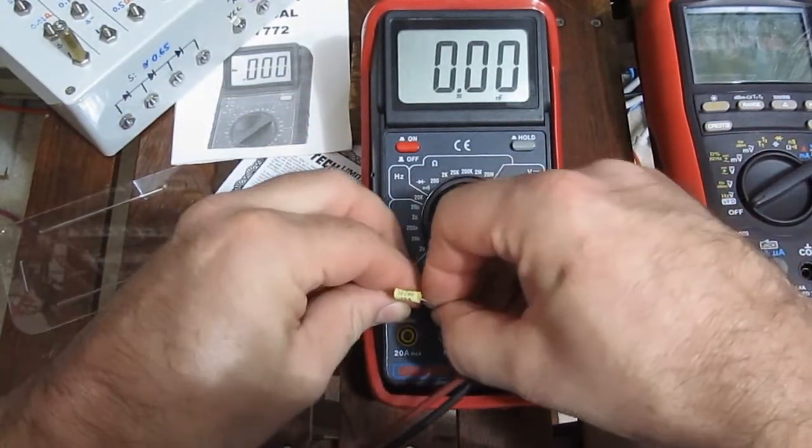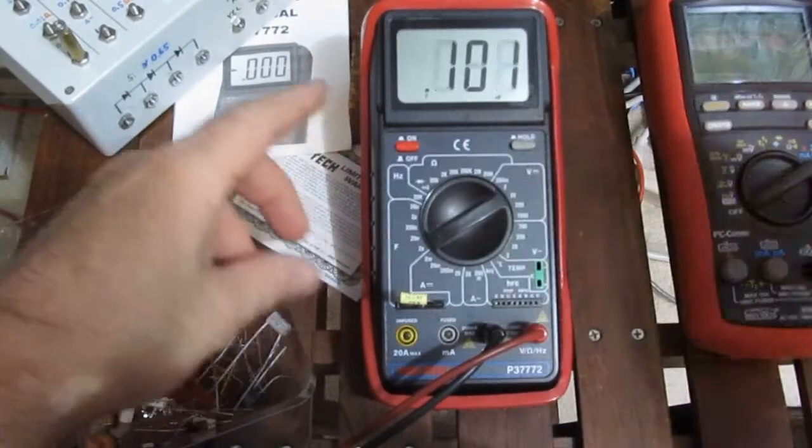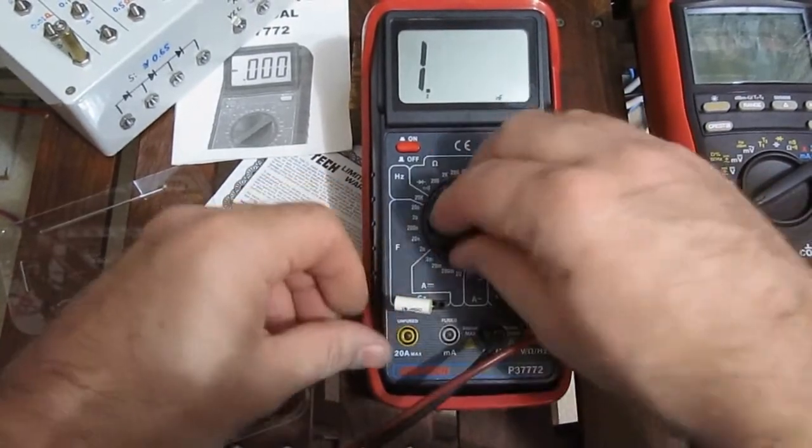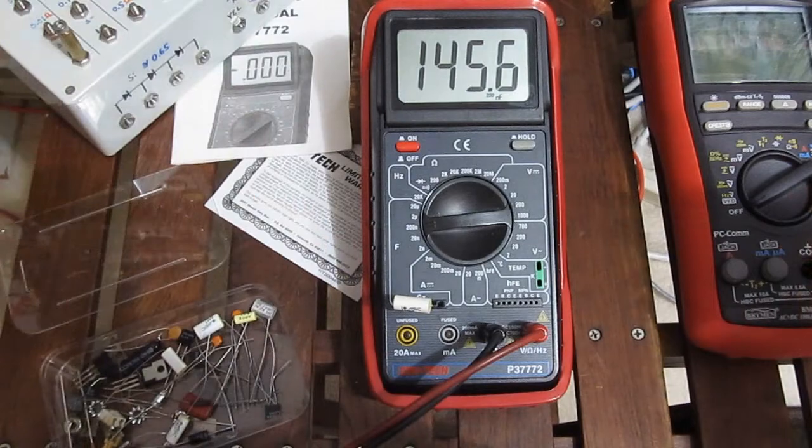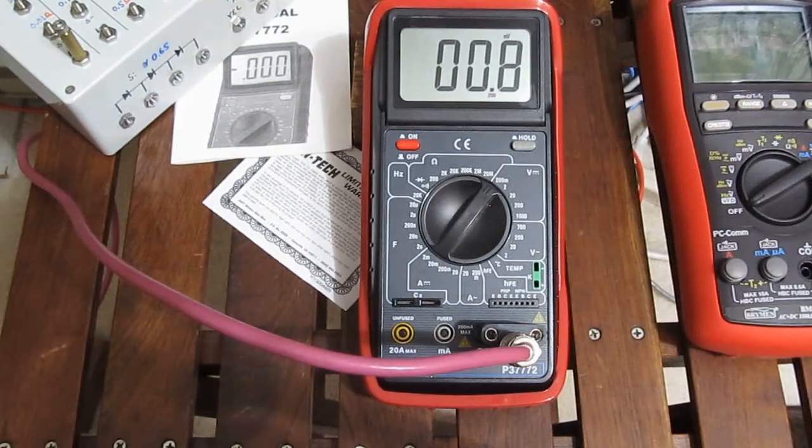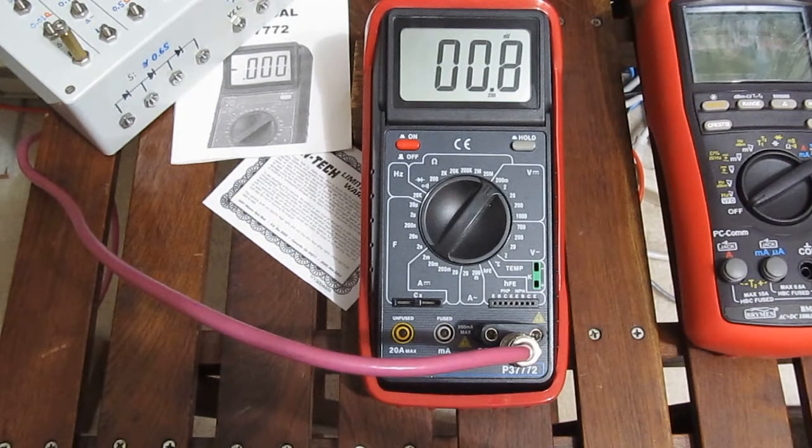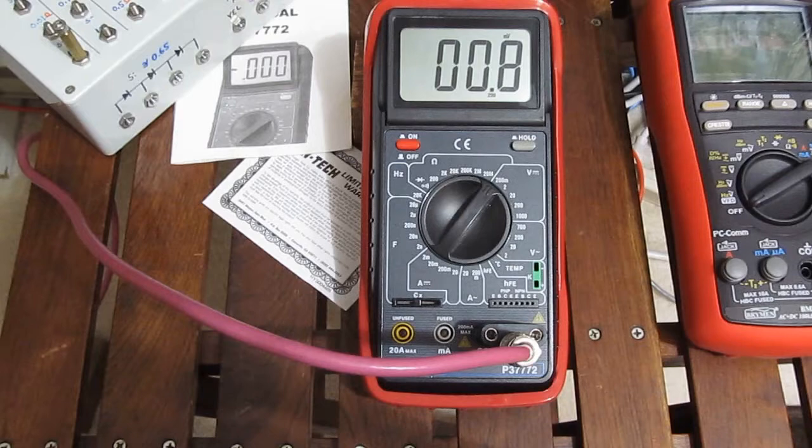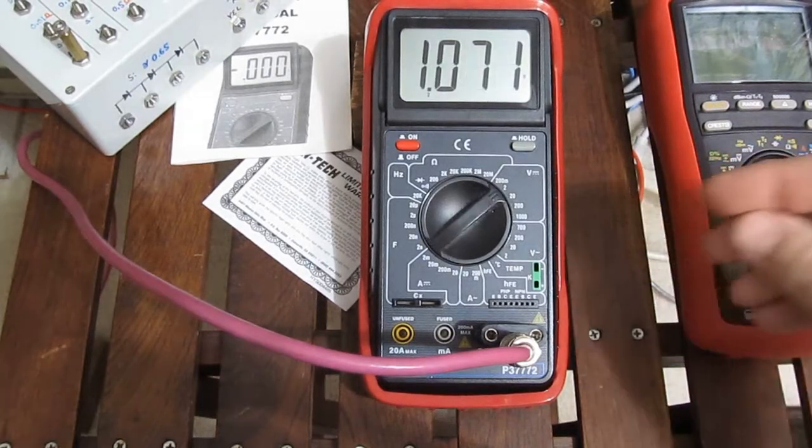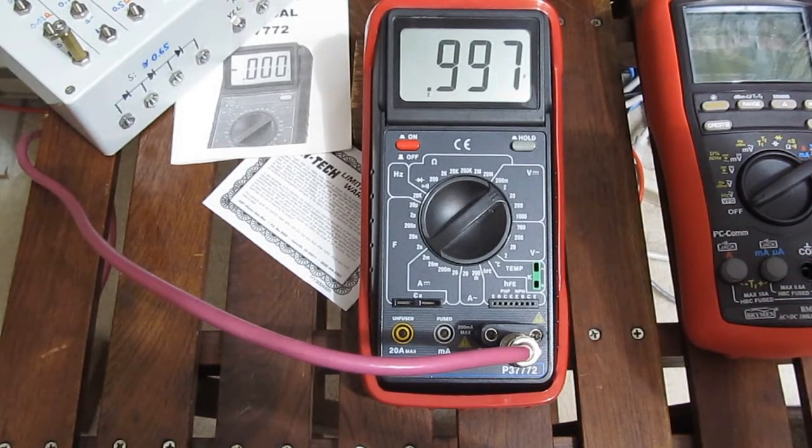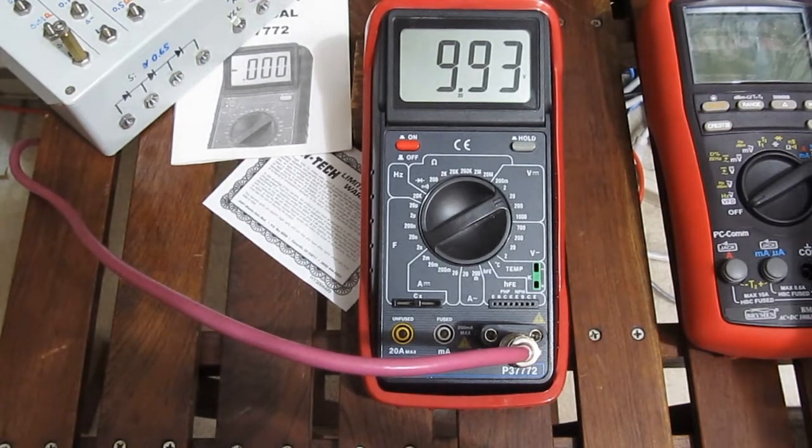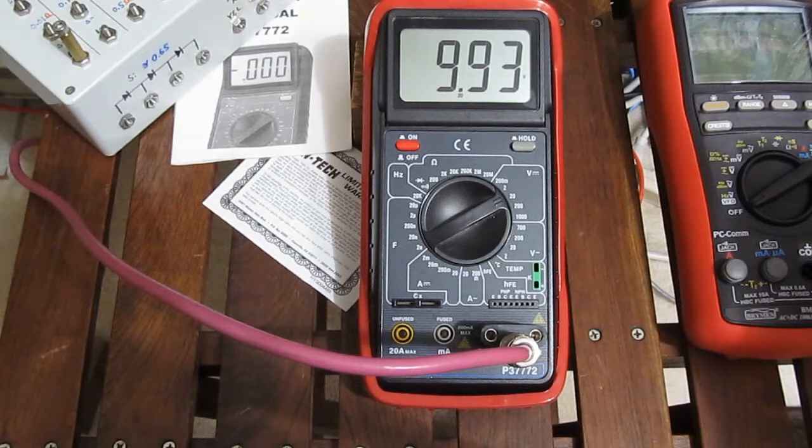This is a 4.7 nanofarad capacitor, this is 100 picofarads, this would be 0.15 microfarad, again very accurate. This is a 1 millivolt signal coming off of my Fluke and this is on the 200 millivolt range. This is 1 volt, this is 10 volts, more than accurate enough for anything I would ever need from the meter.